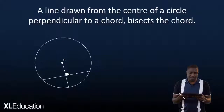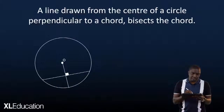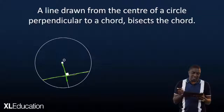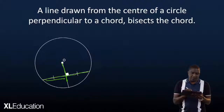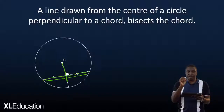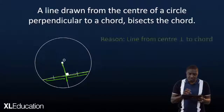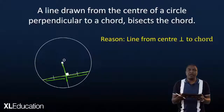The first theorem is: a line drawn from the center of the circle perpendicular to the chord bisects the chord. So if you look at this line going down, it is perpendicular to this chord, and it bisects the chord — the distance from here to there is the same as the distance from here to there. When you state this theorem, the reason to write is: line from the center perpendicular to the chord.